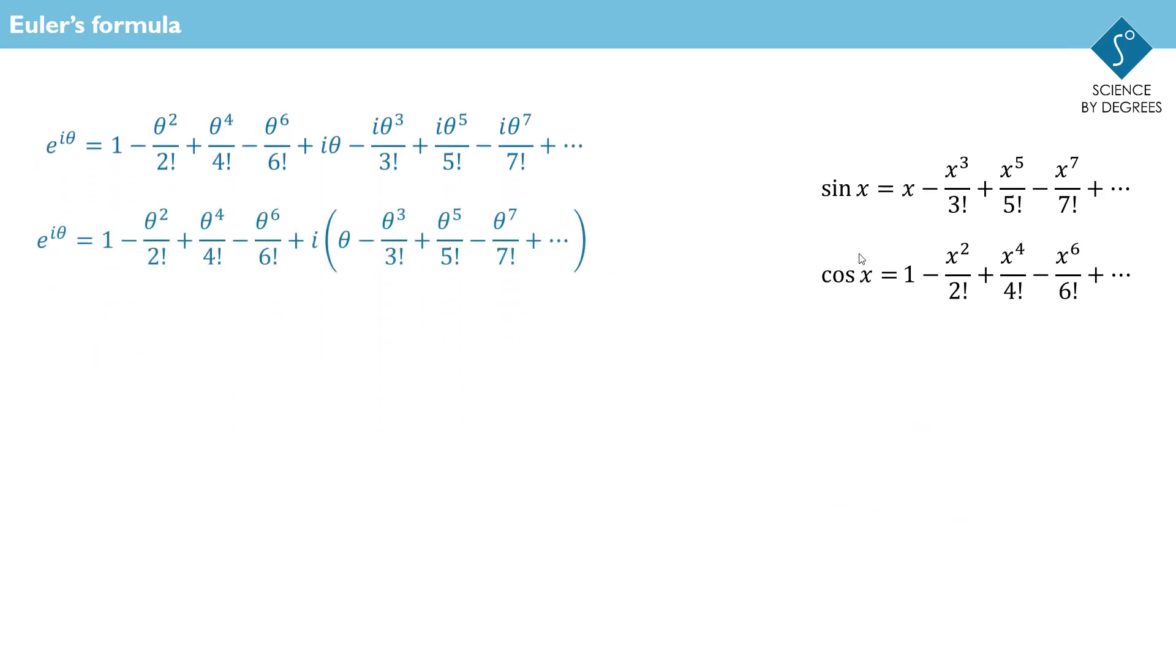And here we are. But the first group of terms is just the expansion for cos theta and the second group of terms is the expansion for sin theta. So the complex exponential e to the i theta can be written as a trigonometric relationship. It might not be obvious why this is so important at first glance, but it really is. And this is Euler's formula.